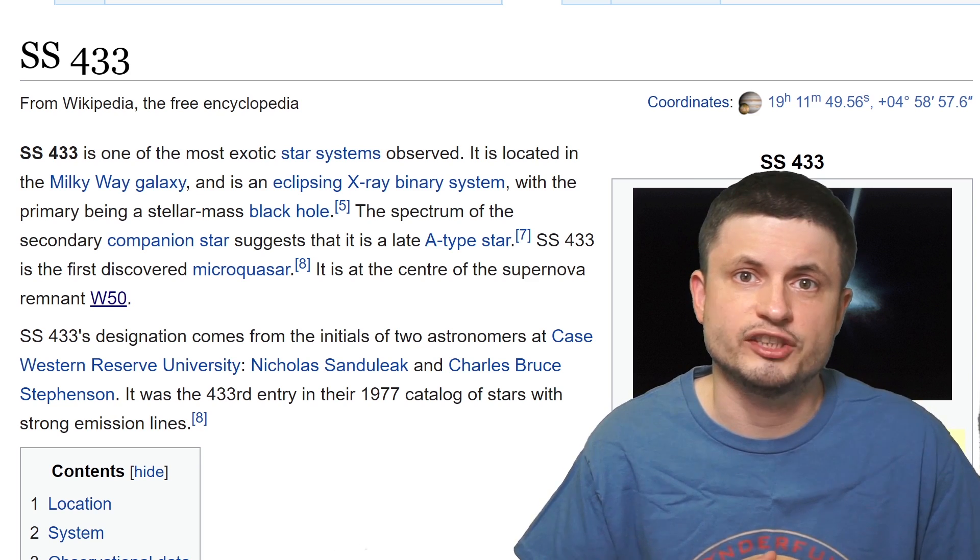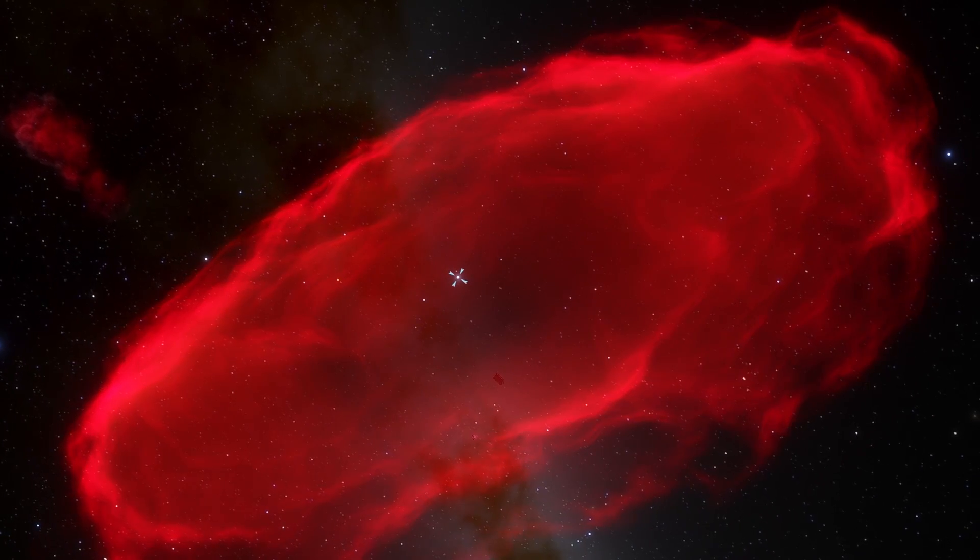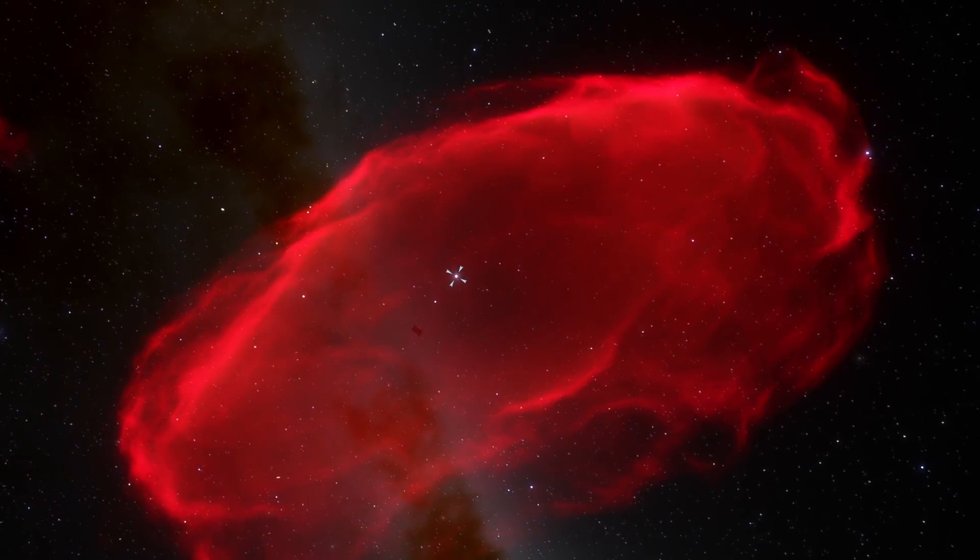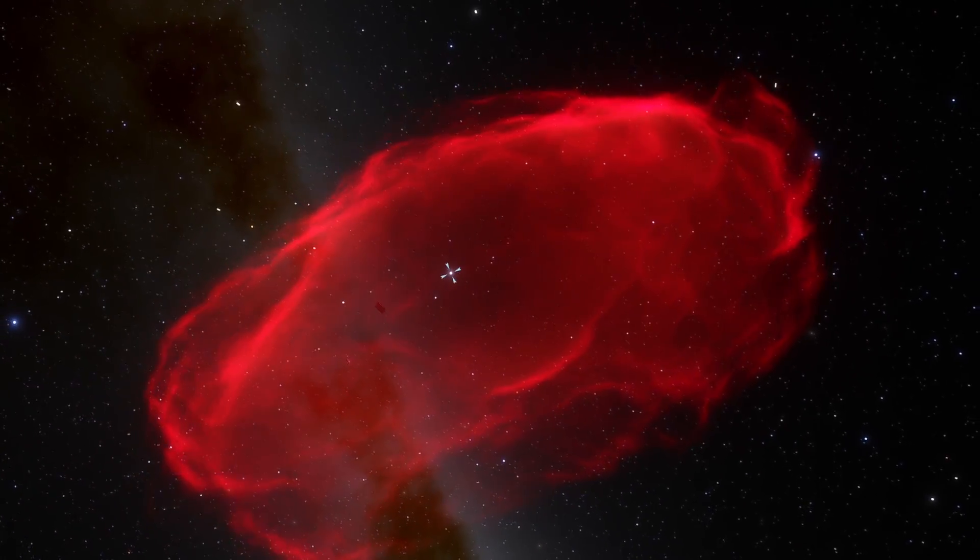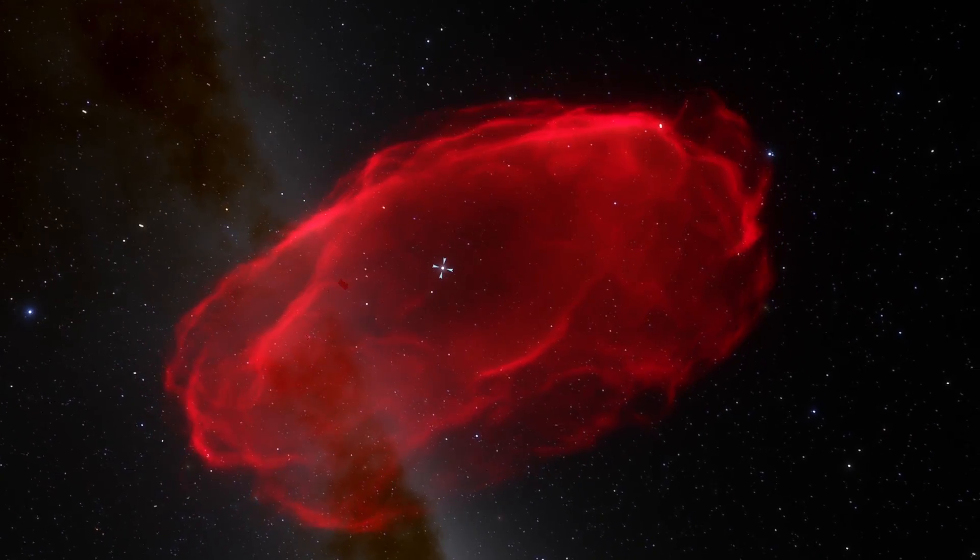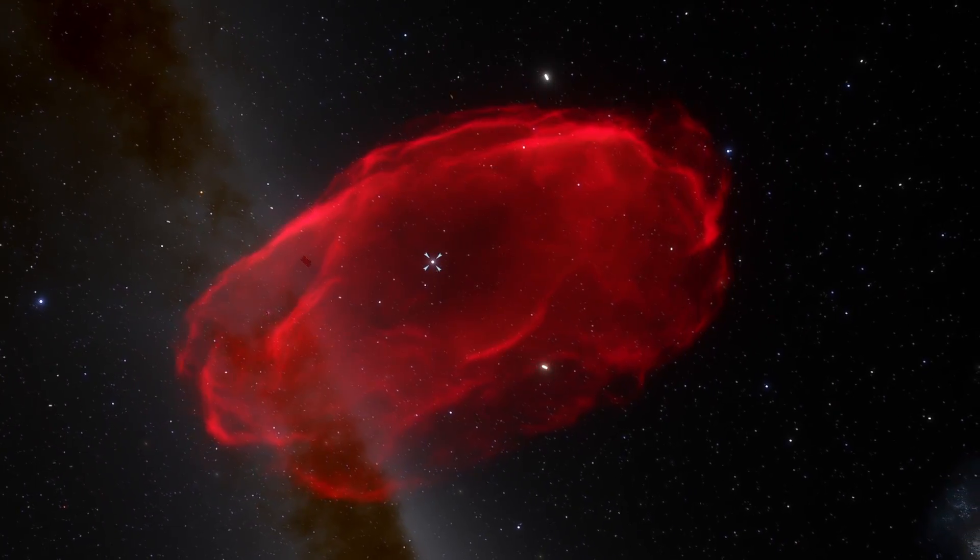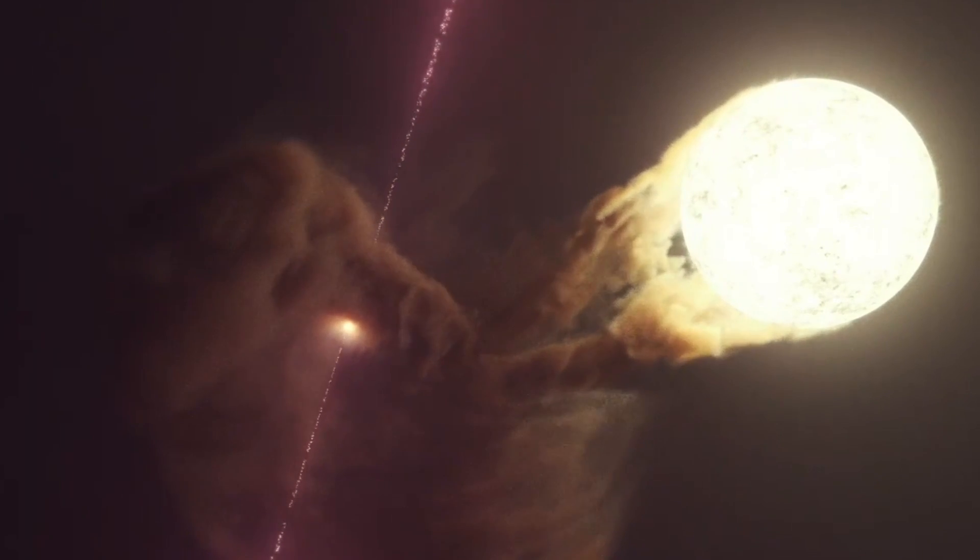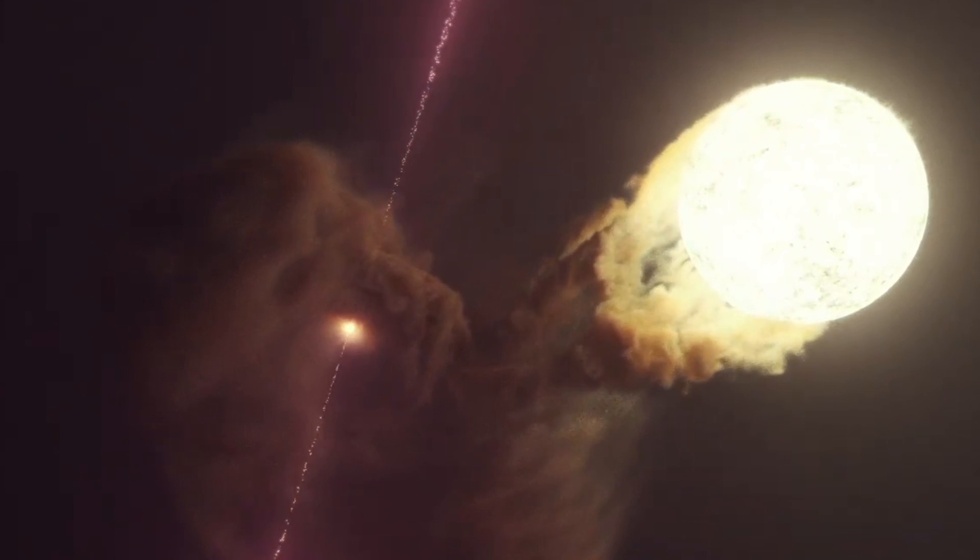One of them is known as SS 433, which is the object you see right there in the middle of this extremely beautiful nebula, the nebula we sometimes refer to as W50 or Westerhout 50. And as you can probably imagine, the object in the middle is responsible for the production of this nebula. And this particular star system is one of the strangest and most exotic star systems we've ever observed.